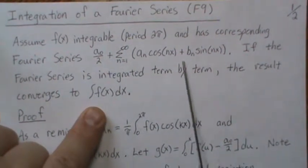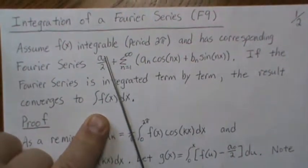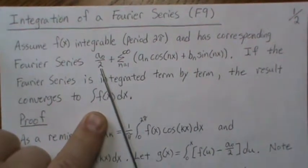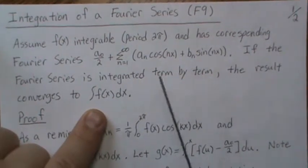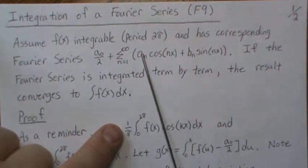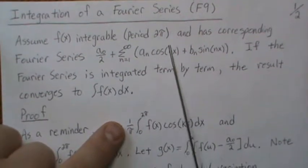Now notice if we integrate this term by term, here we're going to get a₀ over 2x and then since this is a sum we can do it term by term. So this is going to be, this is a constant so it's aₙ times sine of nx over n